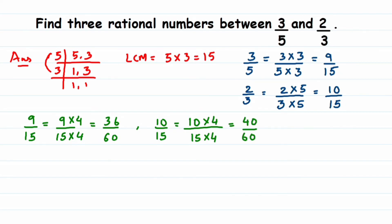Now why are we multiplying? Make sure that when you multiply, the denominators remain the same. Here both denominators are 60. You can observe that we now have 36 and 40, so between 36 and 40 we can find exactly three rational numbers. Therefore, the three rational numbers between 3/5 and 2/3 are...